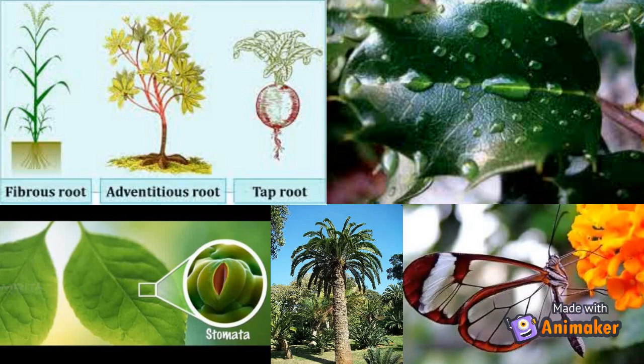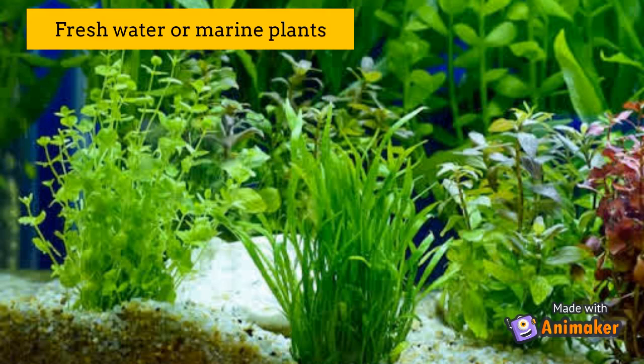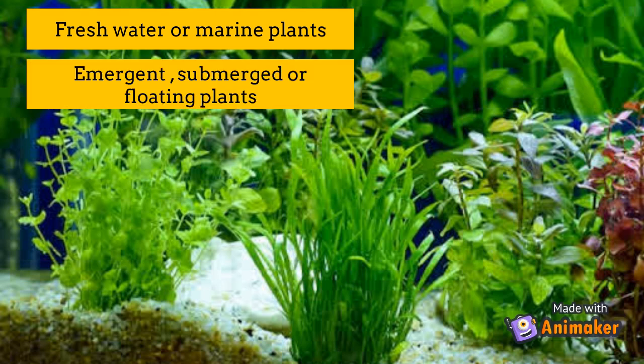Pollinating agents such as wind and insects are essential to facilitate fertilization in land plants. Aquatic plants live in aquatic environments. They can be freshwater plants or marine plants. These plants can be fully submerged in water or floating on water. Due to this, the adaptations shown